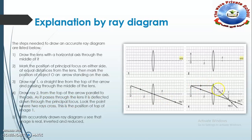As the ray passes through the lens, it is deflected down. As it passes through the principal focus point, the point where the top of the two rays cross each other is called the image position, represented as image I. Here two rays cross each other and that gives the image.